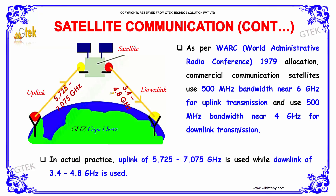As per WARC — the World Administrative Radio Conference 1979 — a commercial communications satellite should use 500 MHz bandwidth near 6 GHz for uplink transmission. In actual practice, the uplink band of 5.725 to 7.075 GHz is used, while the downlink band of 3.4 to 4.8 GHz is used.